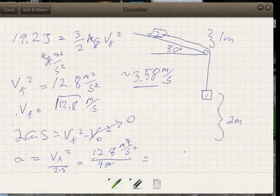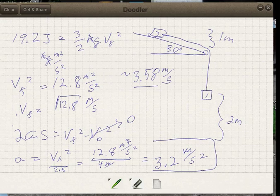And we end up with 3.2 meters per second squared, must be the acceleration of the system as it falls.